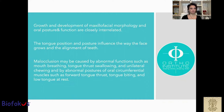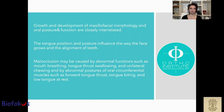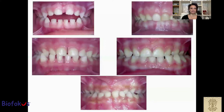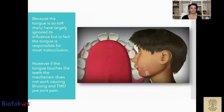The tongue position and posture influence the way the face grows and the alignment of the teeth. Malocclusion might be caused by abnormal functions such as mouth breathing, tongue thrust swallowing, and unilateral chewing, and by abnormal posture of circumferential muscles such as forward tongue thrust, tongue biting, and low tongue at rest. You can see this type of malocclusion created by wrong or incorrect tongue posture. Because the tongue is so soft, many have largely ignored its influence, but in fact the tongue is responsible for most malocclusion.